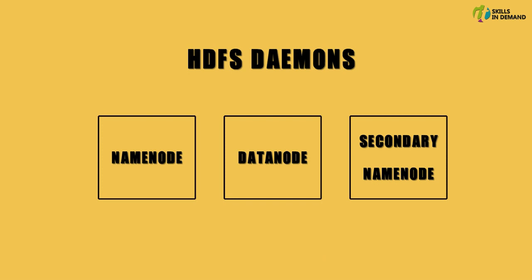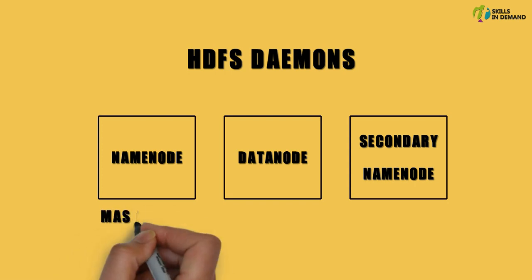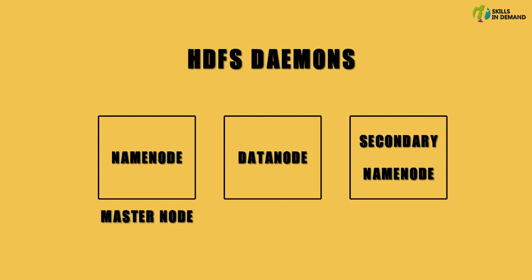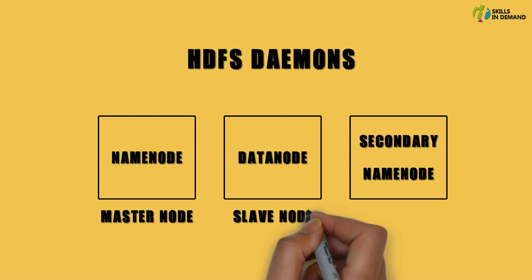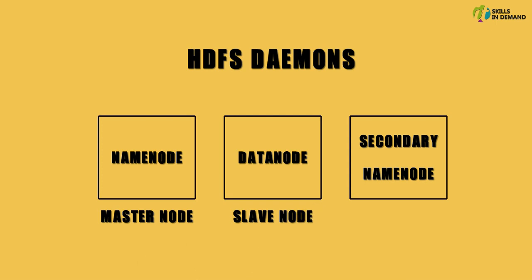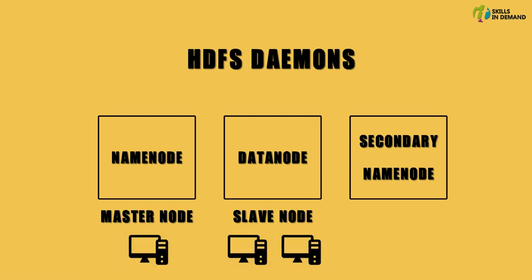The Hadoop distributed file system works on the principle of master-slave architecture. The name node is the master node and the data node is the slave node. Within the Hadoop distributed file system cluster, there is a single name node and multiple data nodes.